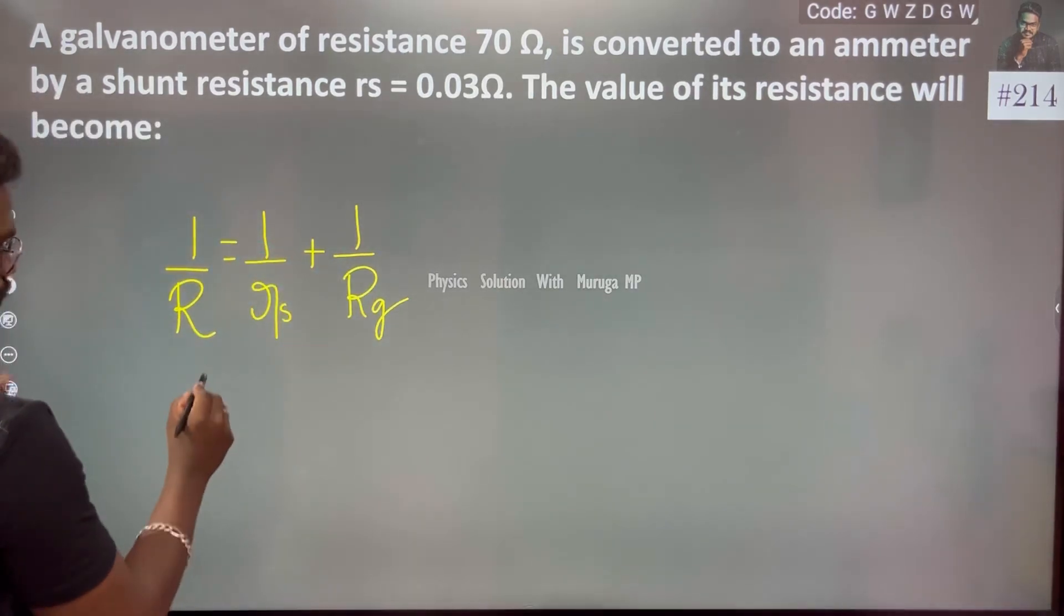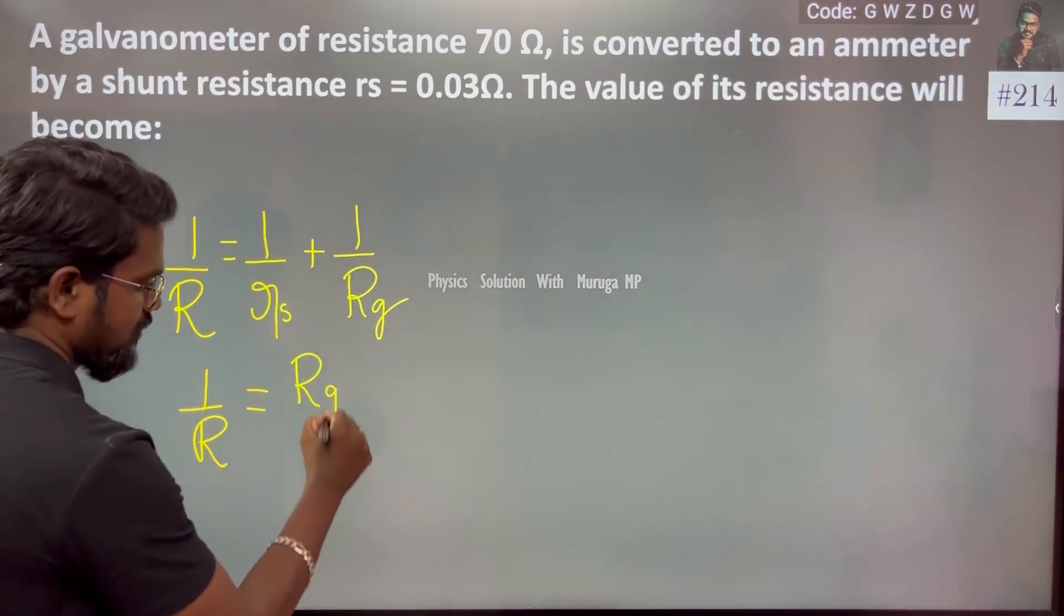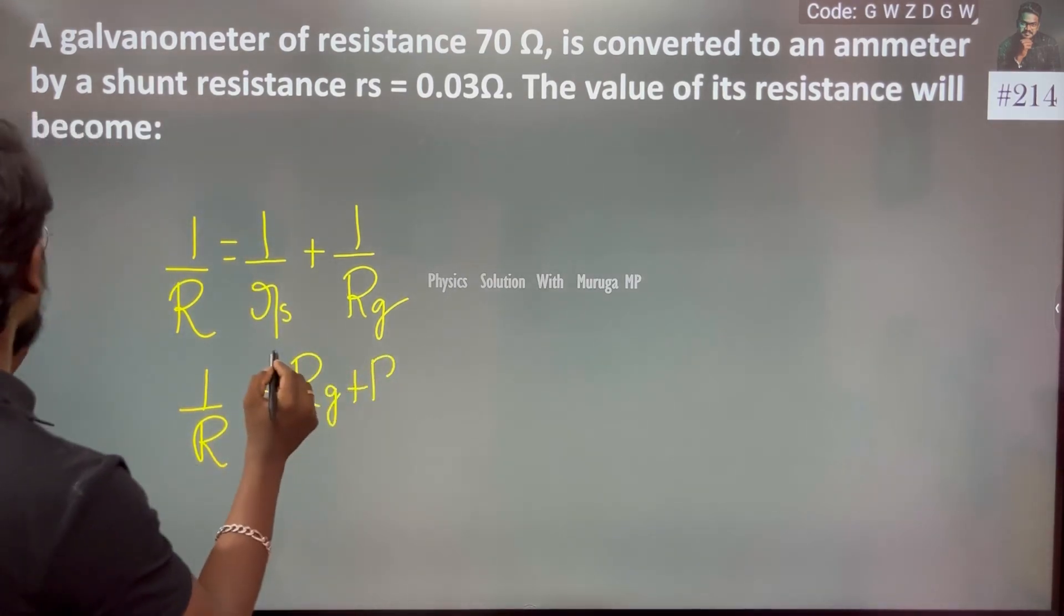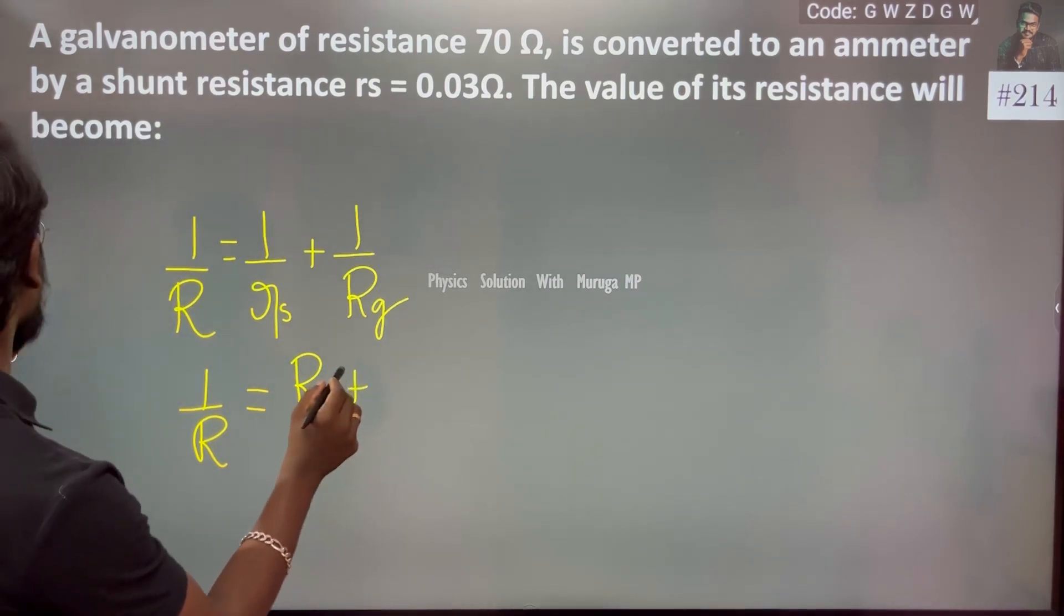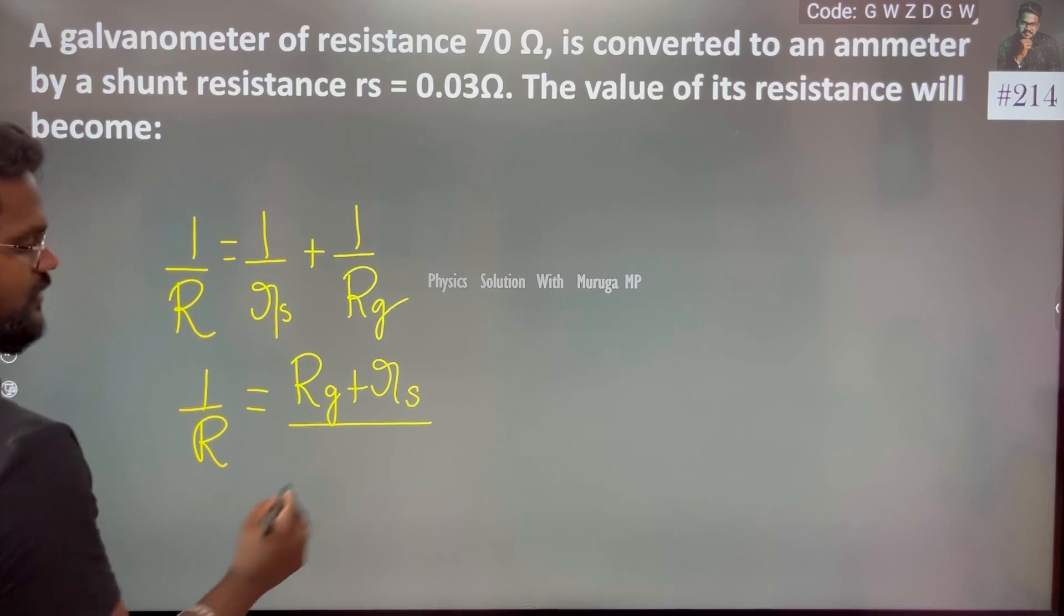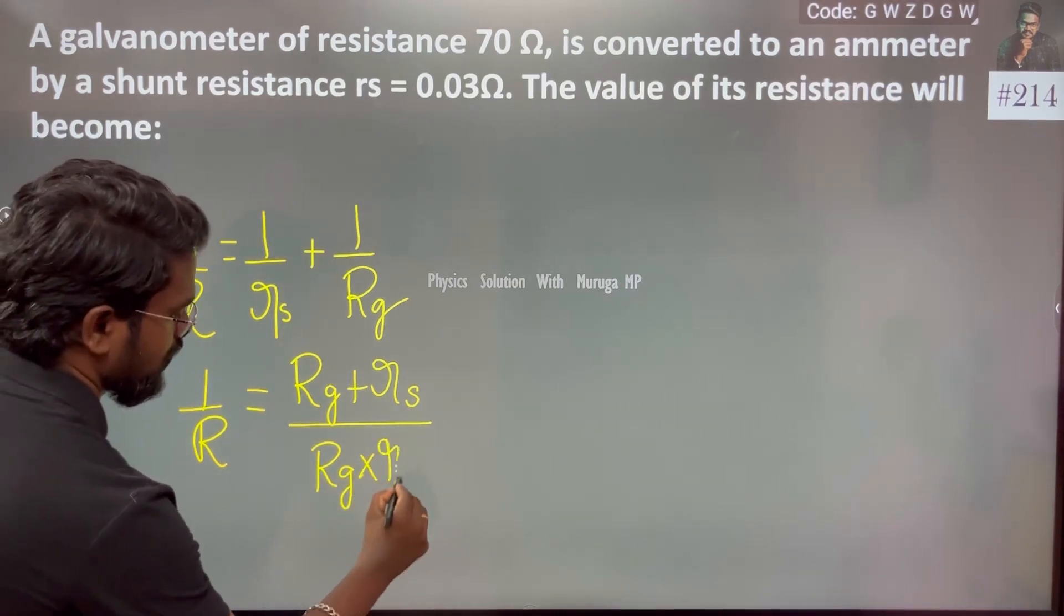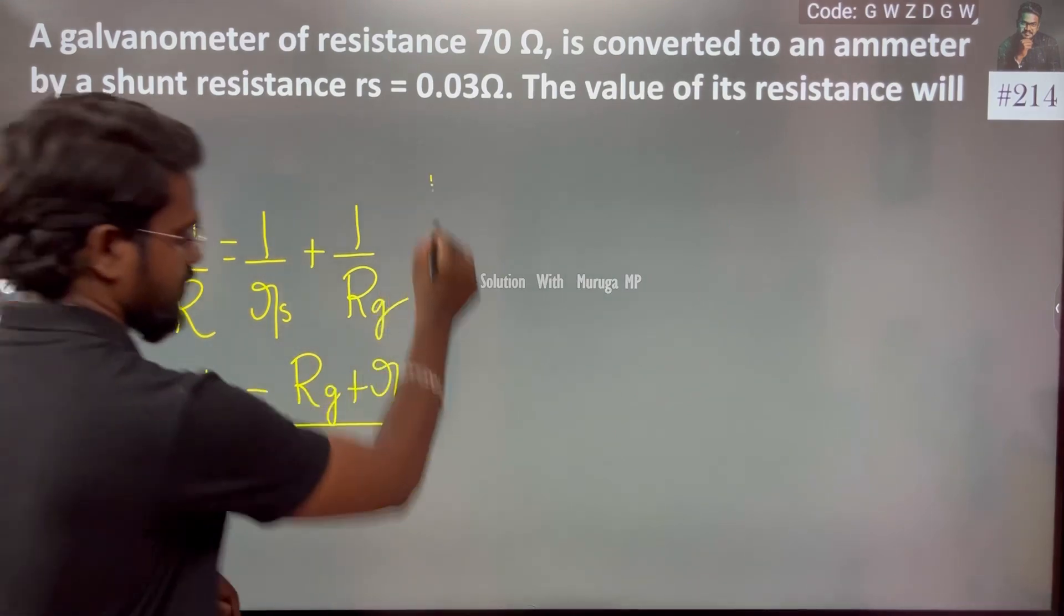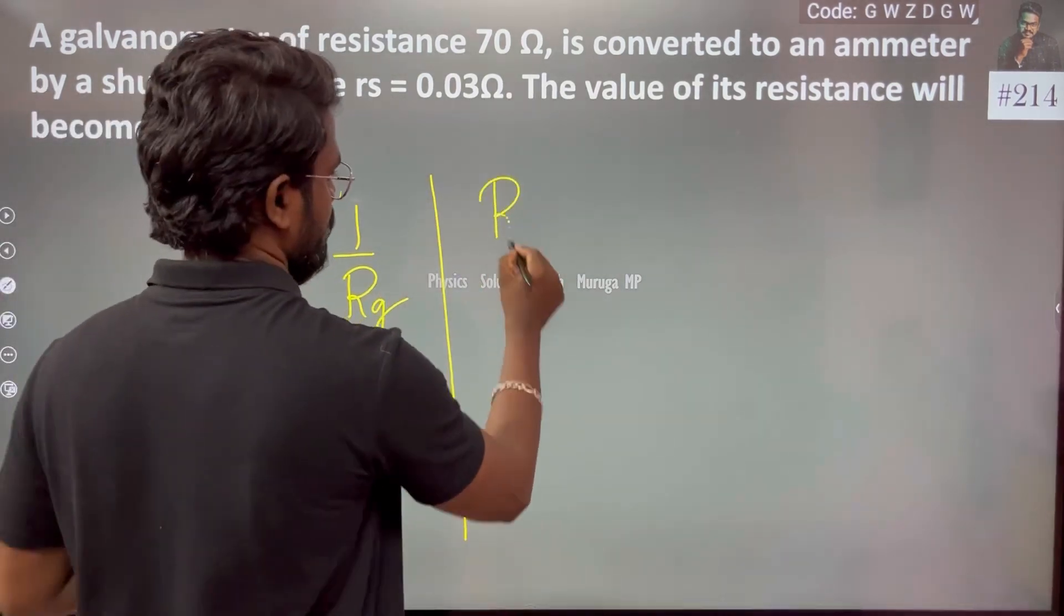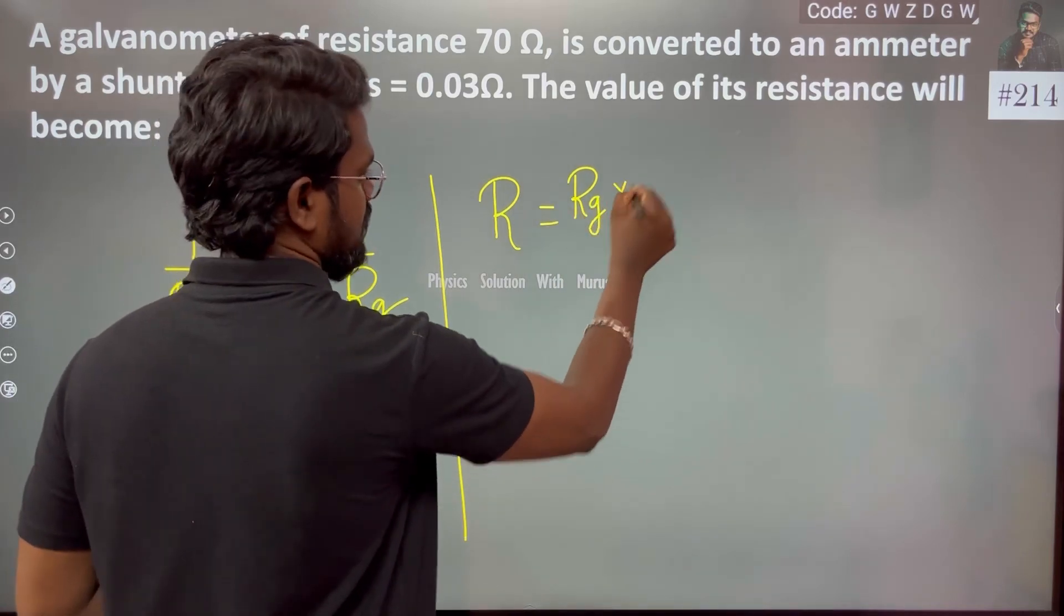When I do so, 1 by R equals (Rg plus rs) divided by (Rg times rs). Therefore, if I do reciprocation, R becomes Rg multiplied by rs divided by (Rg plus rs).